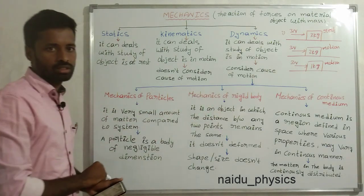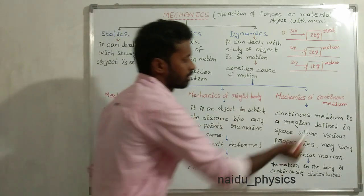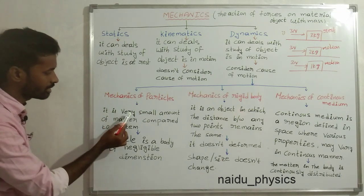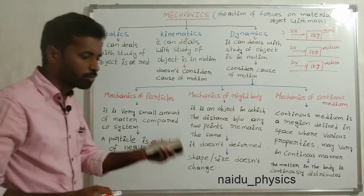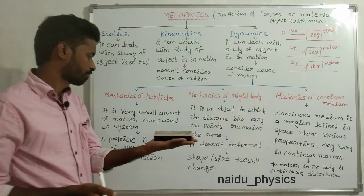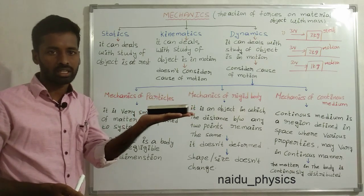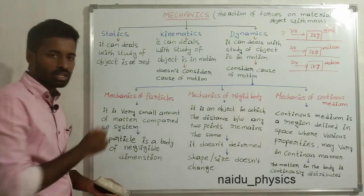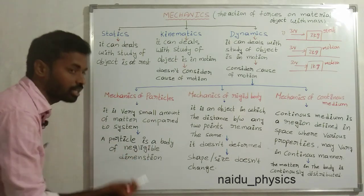You already know Mechanics. What is a Particle? What is a Rigid Body? What is Continuous Media? A particle is nothing but a very small amount of matter compared to the system. In another sense, a particle is a body of negligible dimensions.